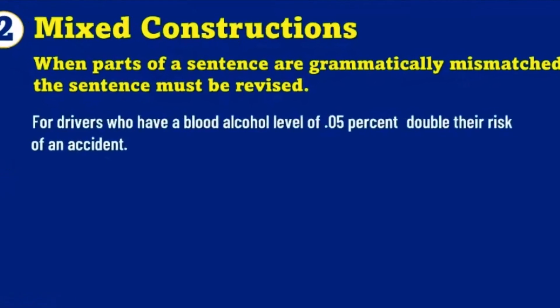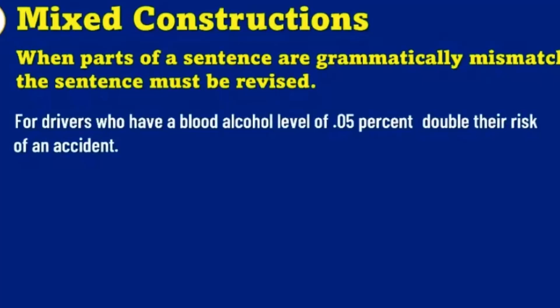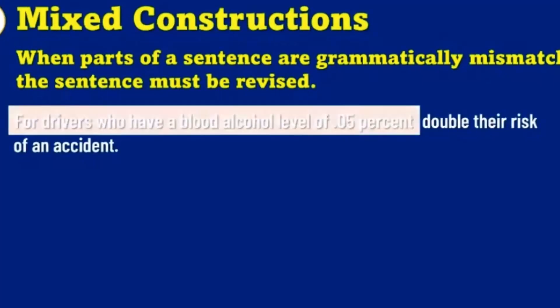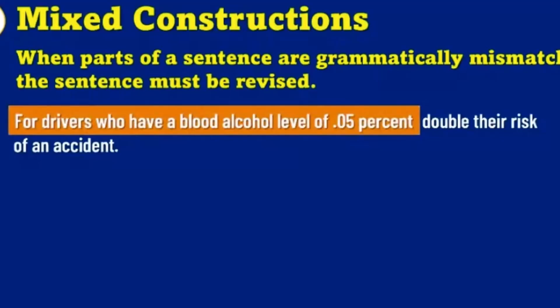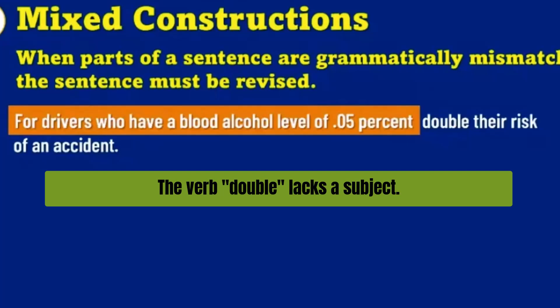So let's look at this one. 'For drivers who have a blood alcohol level of 5%.' Here we have a very long prepositional phrase — preposition 'for,' object of the preposition 'drivers.' But what happens with these long constructions, especially, is that you tend to lose sight of basic grammar.